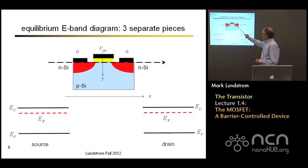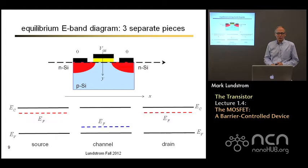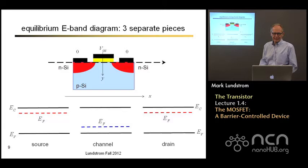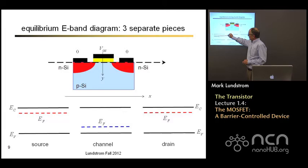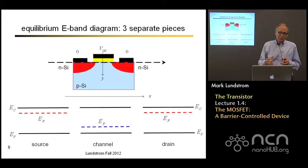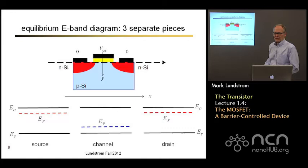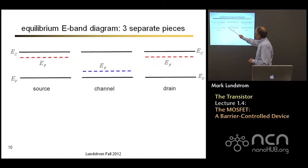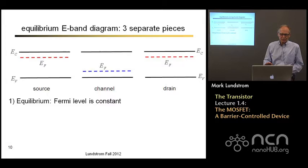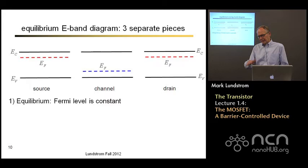Beginning at the n-type source, the Fermi level must be up near the conduction band. The n-type drain is the same. For the p-type channel, the Fermi level is down near the valence band. If we had these semiconductors in isolation, that's what the energy band diagram would look like. But they're not in isolation. The Fermi energy is like the water level in a lake — electrons flow from high Fermi level to low Fermi level. When we put these semiconductors together, there will be charge rearrangement, which sets up electric fields, and the electric fields will change the electrostatic potential.